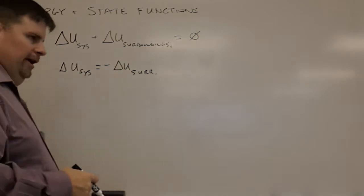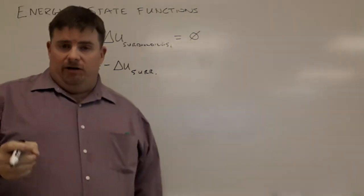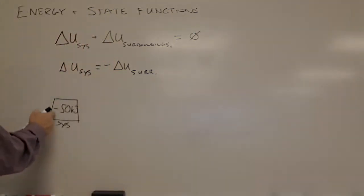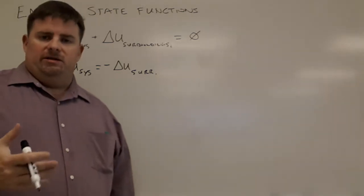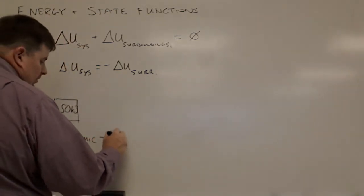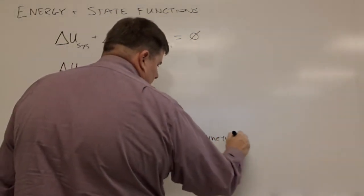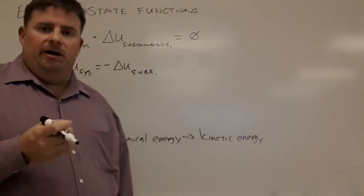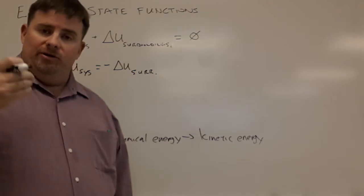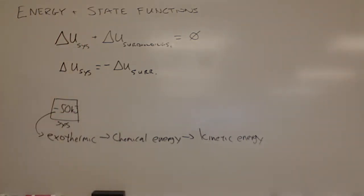If a system has a negative 50 kilojoule value, the negative sign means energy is being released — that's an exothermic reaction. This exothermic energy comes from chemical energy (bond energy) being converted into kinetic energy. When bonds are broken and reformed, energy is released into the surroundings.